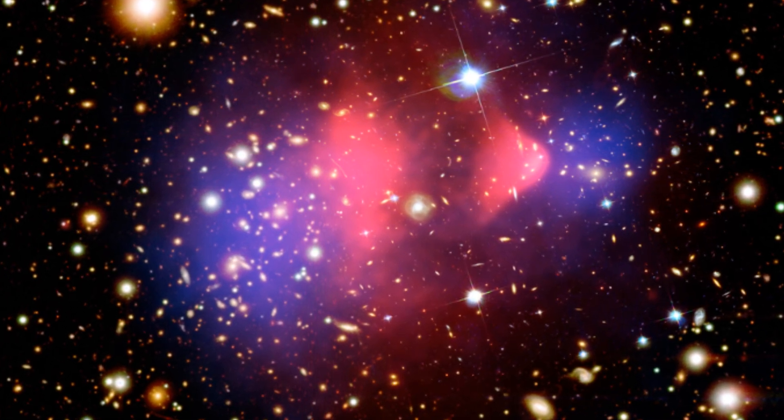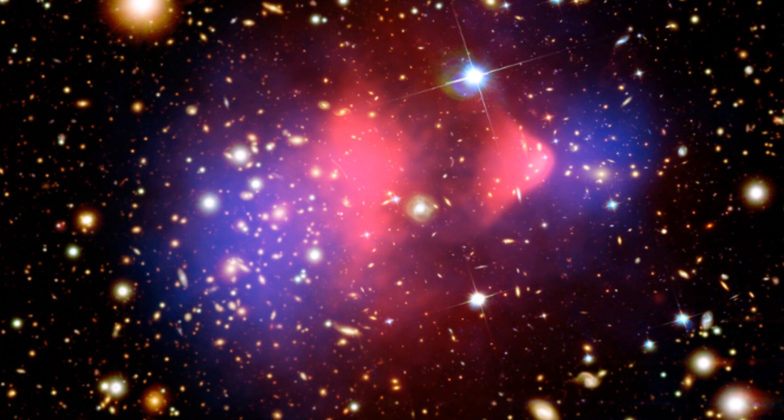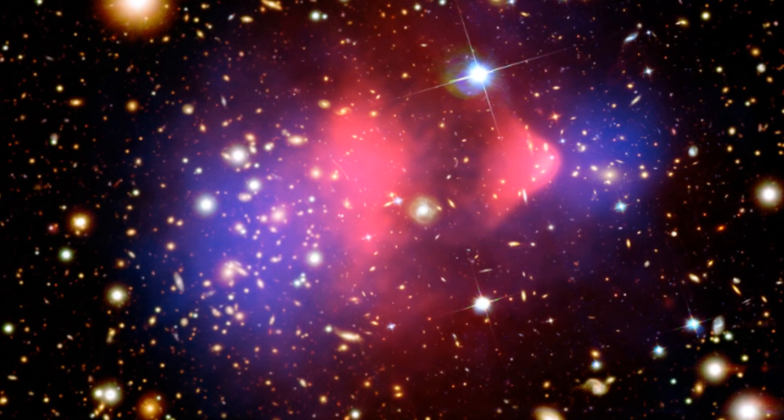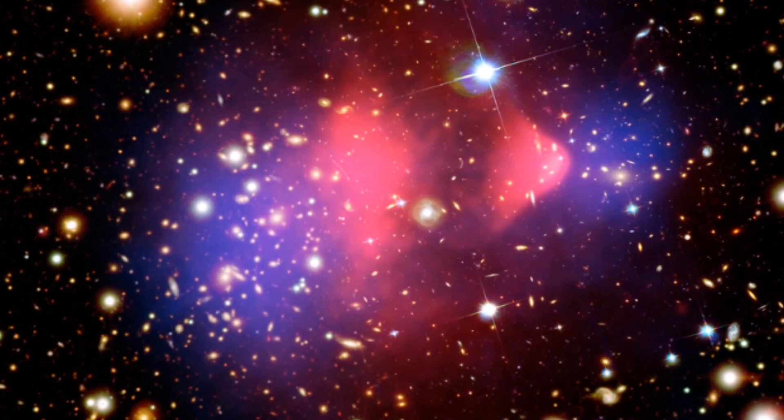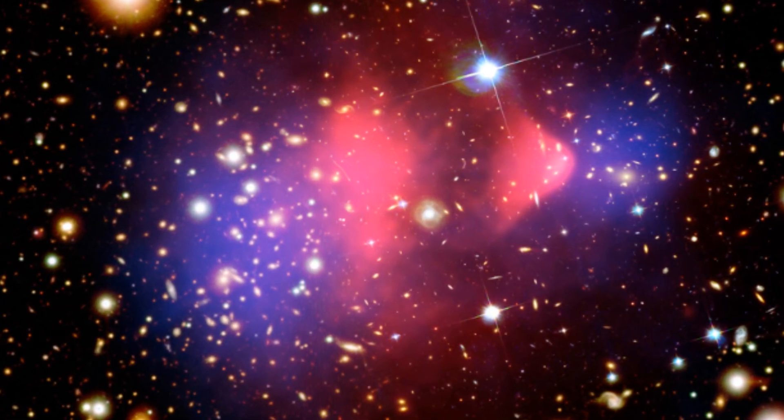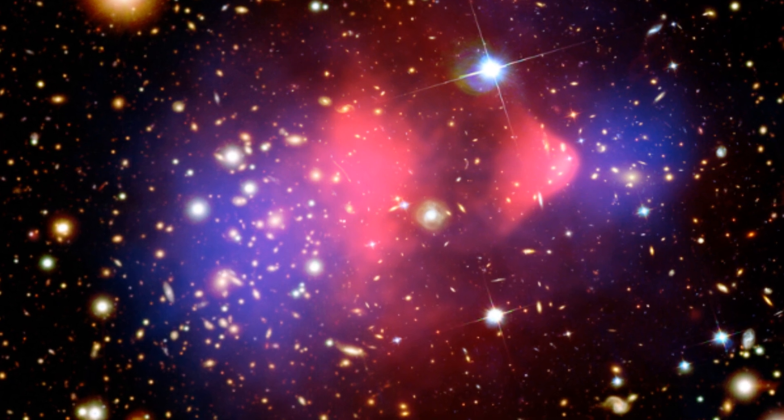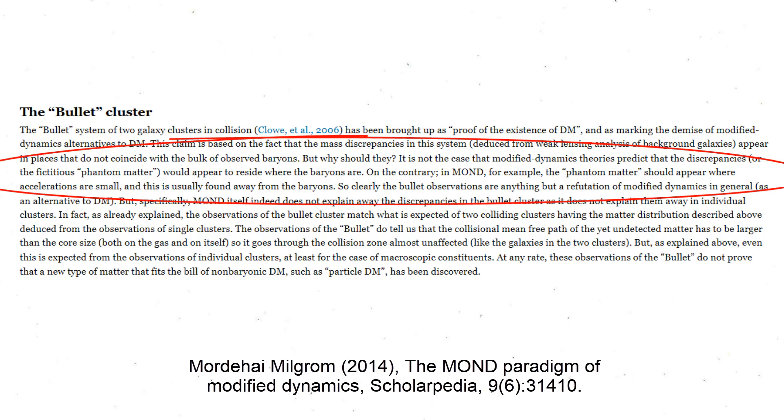At the inner central gas, but MOND does not predict that the discrepancies must be where baryons are. Instead, it predicts that the discrepancies must be where accelerations are small, which is usually found far away from the observed baryonic bulks.